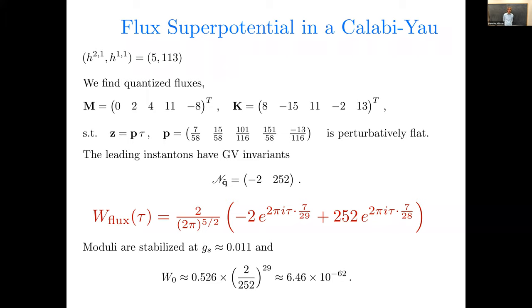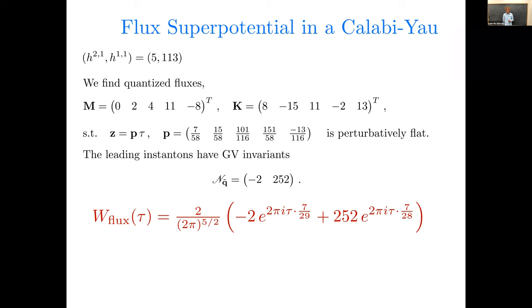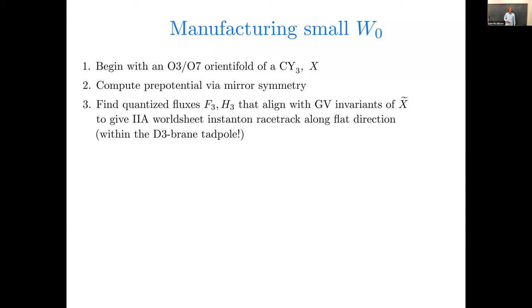Here, the GV invariants in question, if you know it's n, I should have explained the notation, n sub q tilde, those mean the GV invariants associated to this particular direction in the mirror. All right, so we need to find quantized fluxes that align with the GV invariants and give a world sheet instanton racetrack within the D3 brane tadpole, right? We can't put in so much flux that there won't be a consistent solution. Now, the first two steps are computationally challenging in some respects, but not super bad. The problem is step three is a search in a lattice of dimension two h21 of X. And that becomes, that turns out to be feasible when h21 of X is less than, let's say about five on a laptop, maybe seven to 10 on a cluster. You can push these numbers a bit, if you work really hard, maybe even a little bit hard on implementation, but fundamentally it's an exponentially hard search. You're trying to solve some diophantine problems. You're not going to get particularly far above 10, let's say.